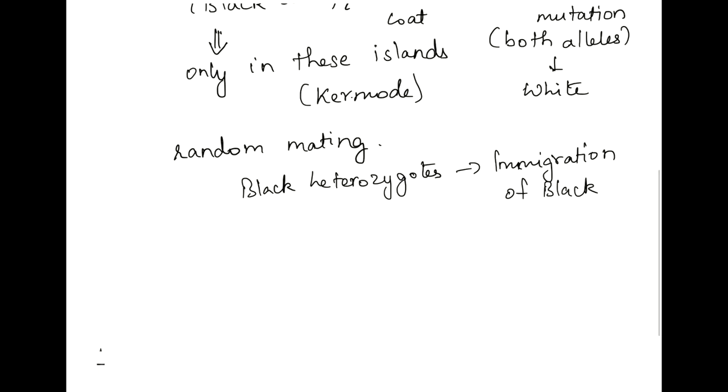People have asked that conservationists have asked this immigration has to be checked. If not, the recessive kermode white coat gene, that is MC1R mutated gene, will be suppressed or lost.